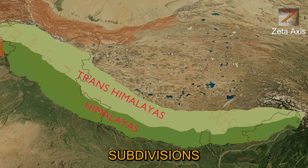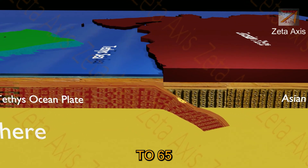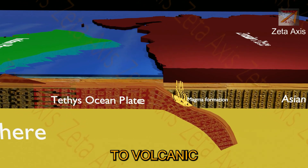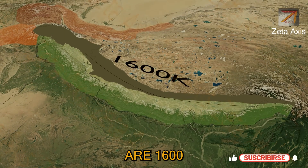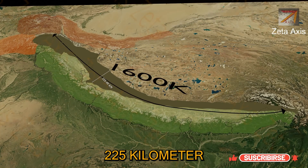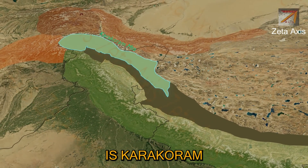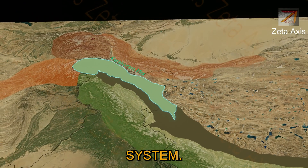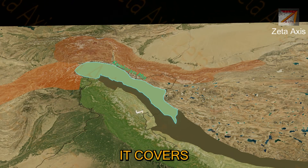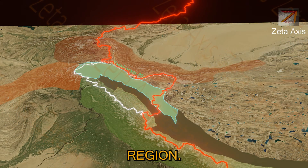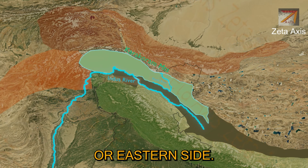Trans-Himalayas were formed around 80 to 65 million years ago from the Eurasian plate due to volcanic activity, and are therefore mainly comprised of volcanic and granitic rocks. Trans-Himalayas are 1600 kilometers long and their width varies from 225 kilometers to 40 kilometers. The first major range of Trans-Himalayas is the Karakoram mountain range, which starts from the Pamir Knot in the west and extends 600 to 800 kilometers to the east, covering all of Ladakh and reaching the Chinese region. Its southern margin is formed by the Indus river on the western side and the Shyok river on the central or eastern side.